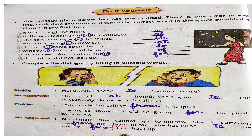Second again — humne jo dialogue hai, usko complete karna hai. Jaise first hai — Pinky and Mr. Agarwal ke beech mein kuch baatcheet ho rahi hai. Toh first of all, Pinky kya keh rahi hai — hello, may I speak — dash — Garima please, toh may I speak to — kya mein Garima se baat kar sakti hoon. Toh Mr. Agarwal kya kehde — no, she is not at home, she is gone to the doctor, may I know who is calling. She says, I am Pinky, I am calling from Janakpuri. I want to know if she'd be going — dash — the picnic, kya wo kal for the picnic jayegi ya nahi. Toh Agarwal ji kehde — no, she cannot go tomorrow, she is suffering from high fever. In fact she has gone to the doctor for her check-up. Toh is tarah se you will be completing it in your books.